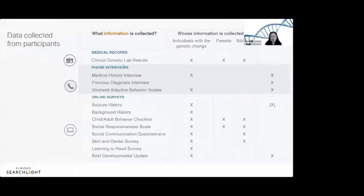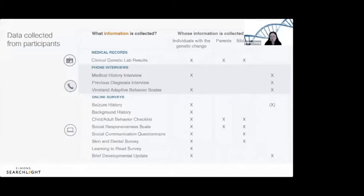The first part is determining eligibility, where we look at a genetic test report to make sure you're in the right group — that the particular finding really is associated with the condition. In general, about 95% of the time folks are confirmed to be in the right group. Rarely, there may be other testing that should be done or something that was misunderstood, and we try to help clarify that and get families to the right diagnosis.